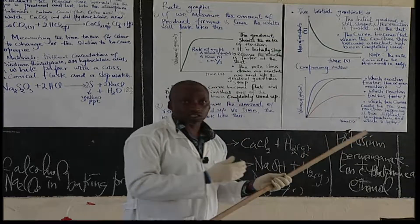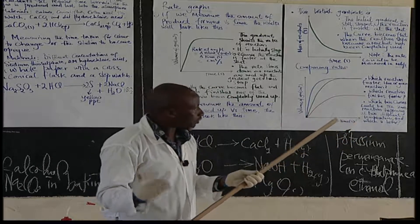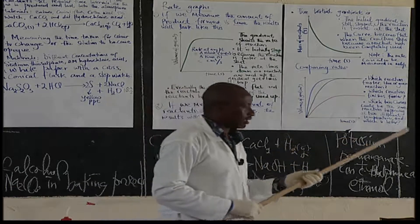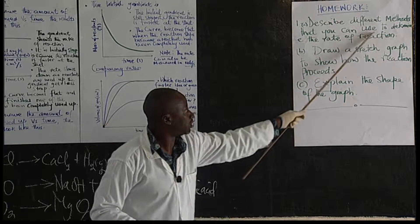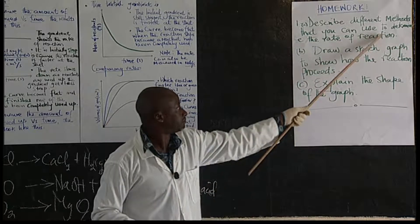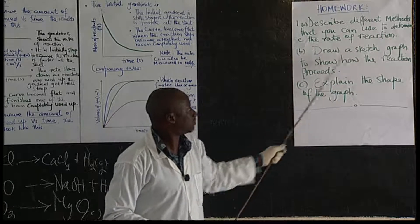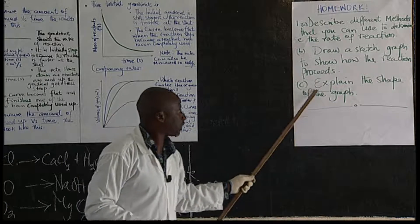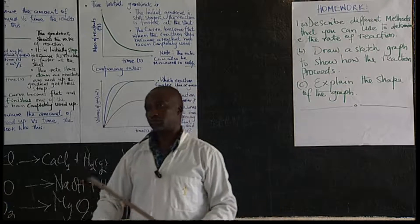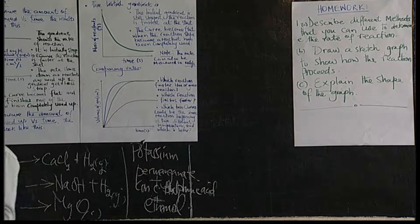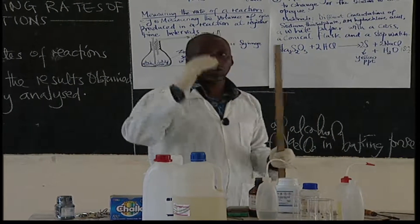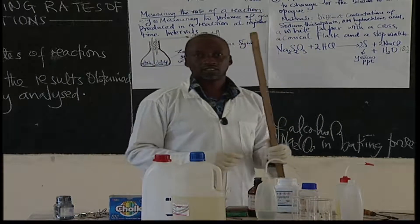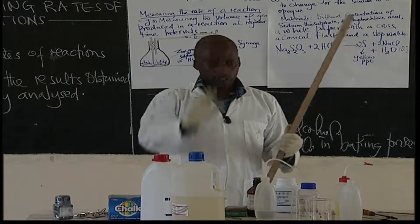The rate can be determined at any point on the curve by determining the slope or gradient, which is change in y over change in x — for example, change in mass over change in time, or change in volume over change in time. For homework, describe different methods you can use to determine the rate of reaction, and draw a sketch graph to show how the reaction proceeds, explaining the shape of the graph at each point. Thank you for watching; in the next lesson we'll talk about the factors that affect the rates of reaction.